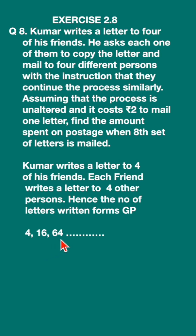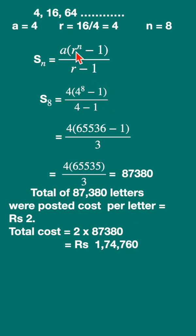So the total letters will be 64. Like this, 8 times it continues this process. This is a GP, geometric progression, and the first term is 4. The common ratio is 16 upon 4, that is also 4.